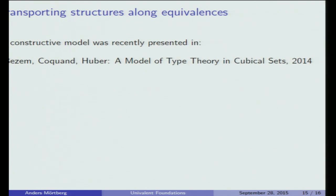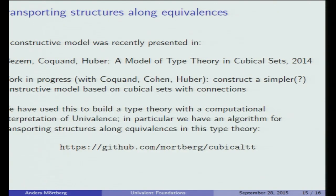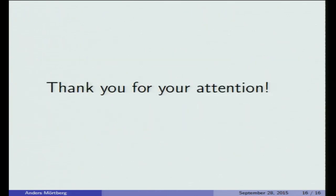The idea is to find a constructive model and then extract an algorithm to tackle this open problem. Marc Bezem, Thierry Coquand, and Simon Huber recently presented such a constructive model in cubical sets in 2014. I have been working with Thierry Coquand, Cyril Cohen, and Simon Huber to simplify this model — working with cubical sets with connections instead of plain cubical sets, which simplifies some constructions. We have used this to construct a new type theory with a computational interpretation of univalence, giving an algorithm for transporting structures along equivalences. We even have an implementation of a simple proof assistant built on this type theory.